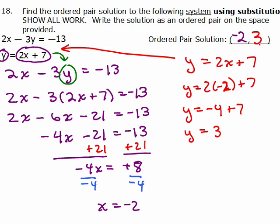And you want to make sure by checking in the first equation, actually in both, but especially the first one. Is 2 times negative 2 minus 3 times 3, does that really equal negative 13? So I've got negative 4 minus 9 equals negative 13, yes, so it looks good.